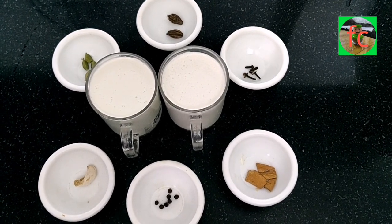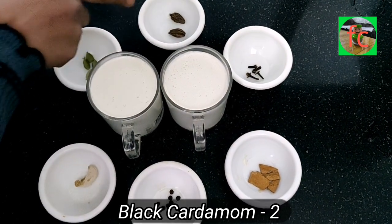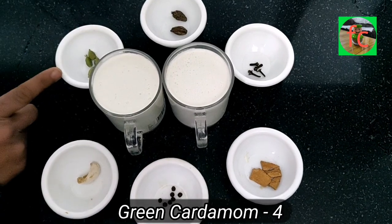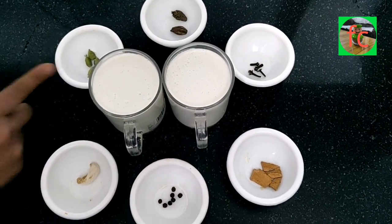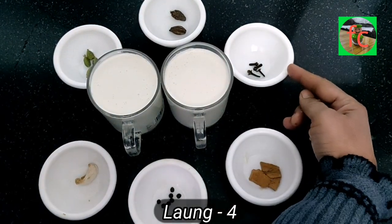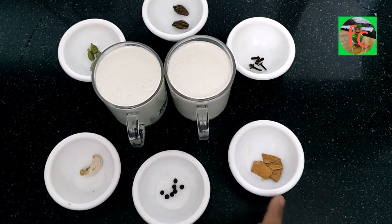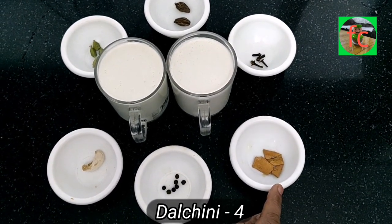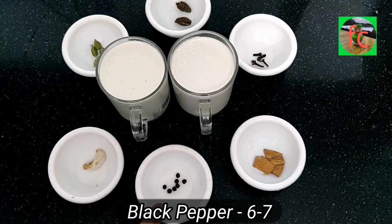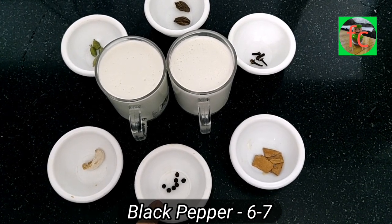To make masala tea we have taken some whole spices. I have taken two big cardamoms, four small green cardamoms, four cloves, four pieces of cinnamon, and six to seven black pepper corns.